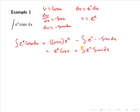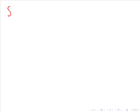What we have here is a repeated integration by parts. To calculate the integral of eˣ cos(x) dx we must first calculate the integral of eˣ sin(x) dx. So now we calculate our second integration by parts: the integral of eˣ sin(x) dx.